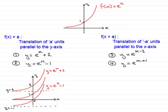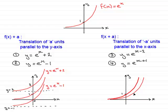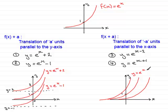Let's put up the axes and the graph of y equals e to the power x. Taking that graph and sliding it 2 units to the right gives the graph of y equals e to the x minus 2. Then taking e to the x and sliding it 1 unit to the left gives us the graph of y equals e to the x plus 1. Let me mark in the graphs: this one here is y equals e to the x plus 1, and this one is y equals e to the x minus 2.